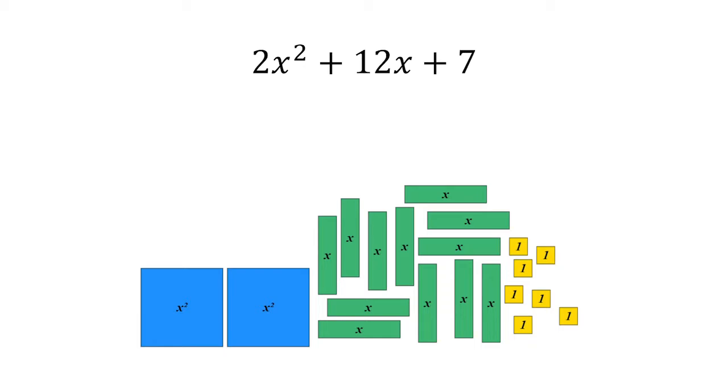After a bit of wrestling with this problem, they'll find that they can't form a square. The reason for this is that the two blue squares form a rectangle and not a square. So however we arrange the green tiles and the yellow tiles, we'll never be able to build a square.